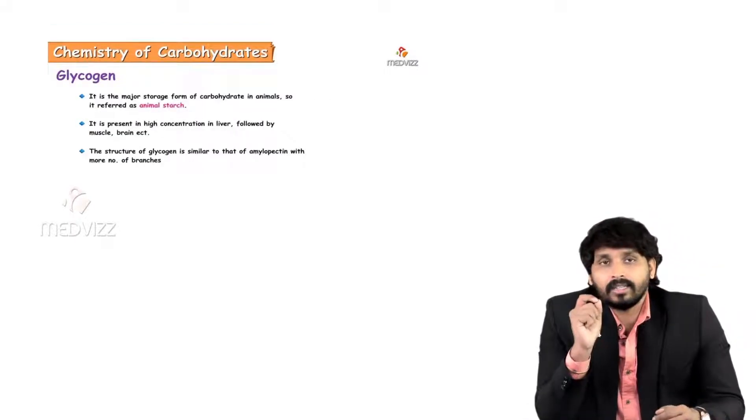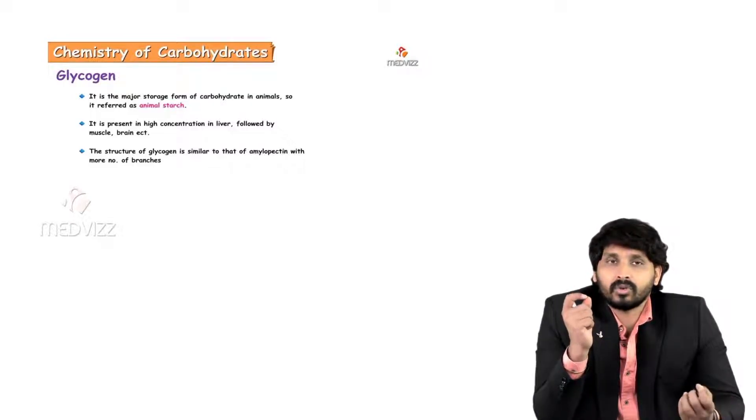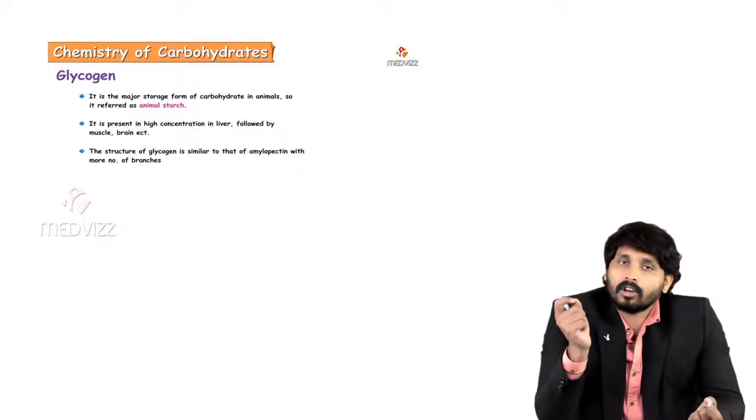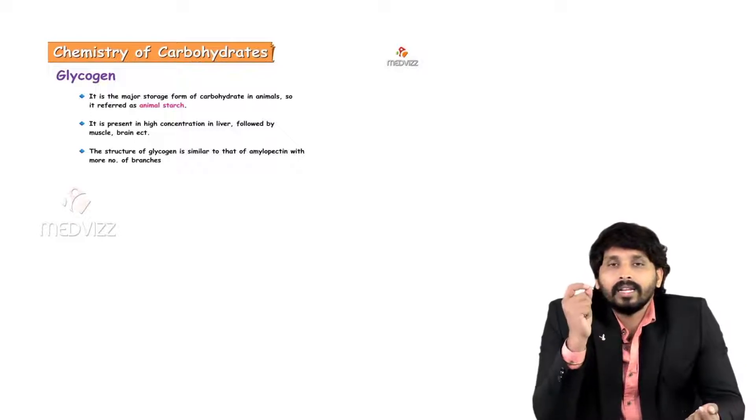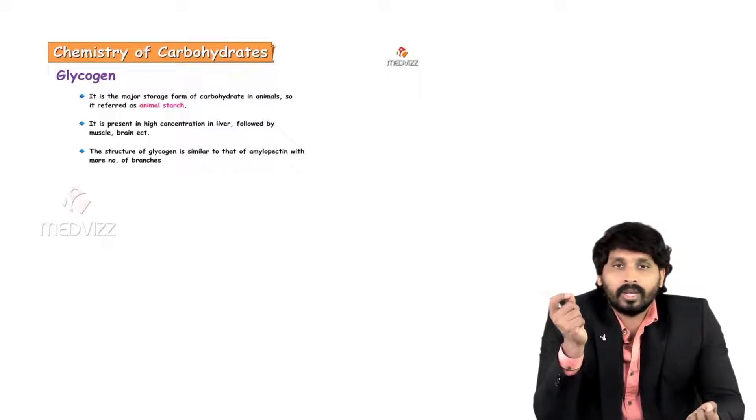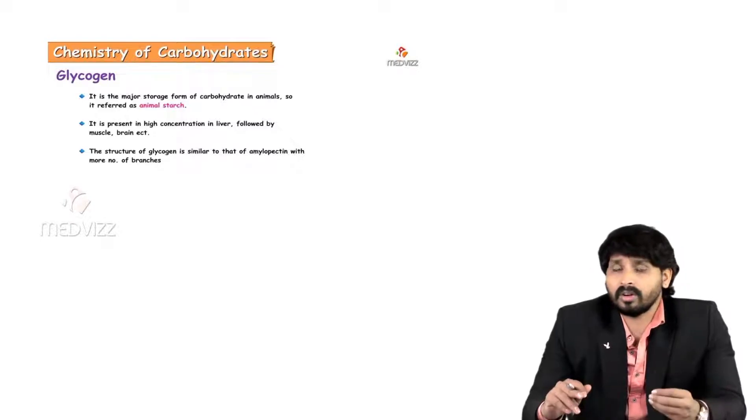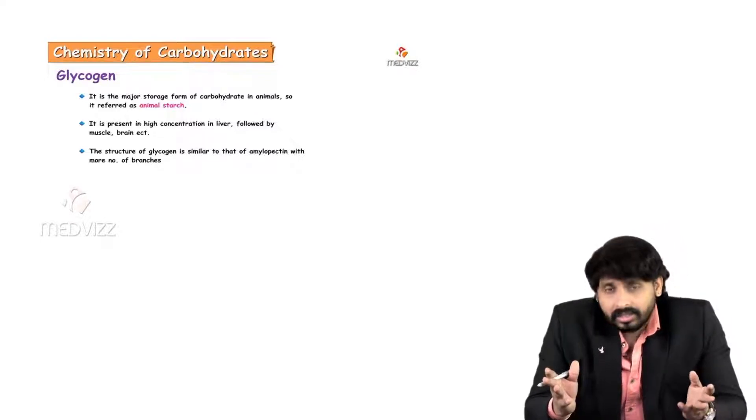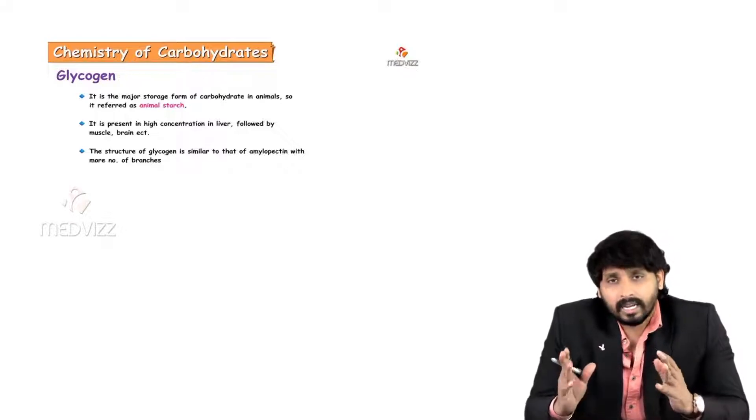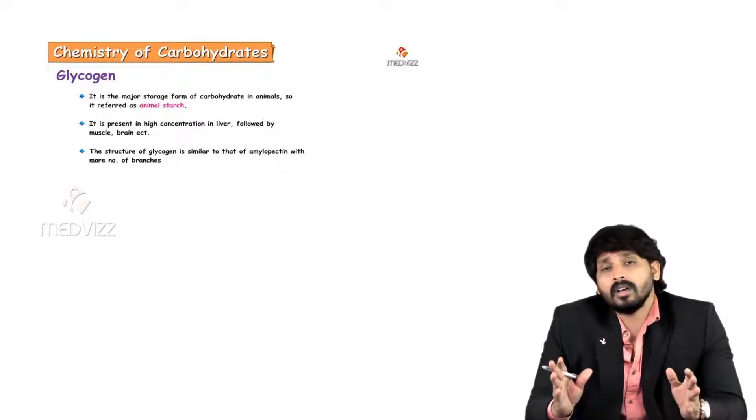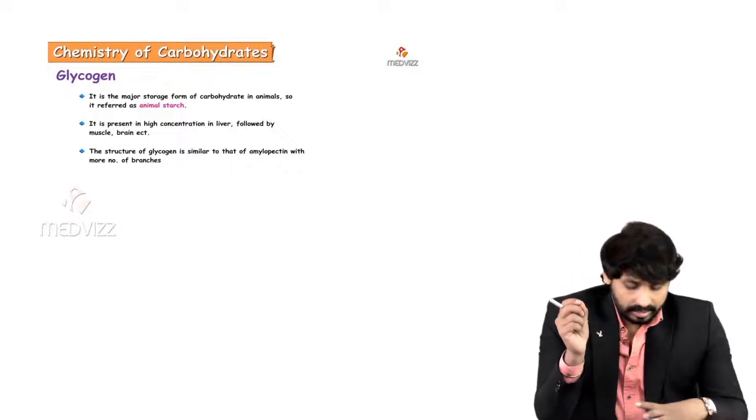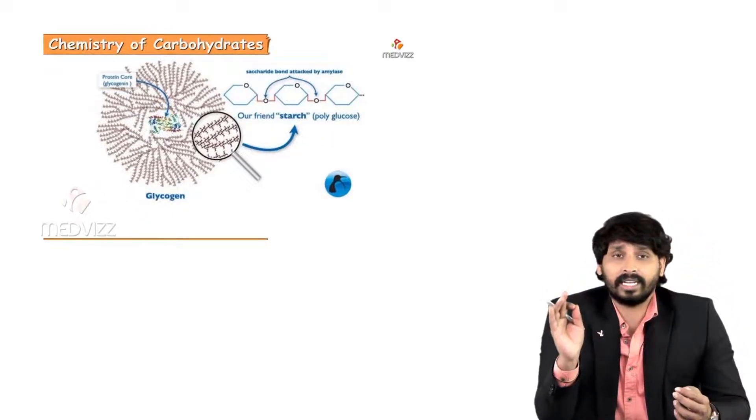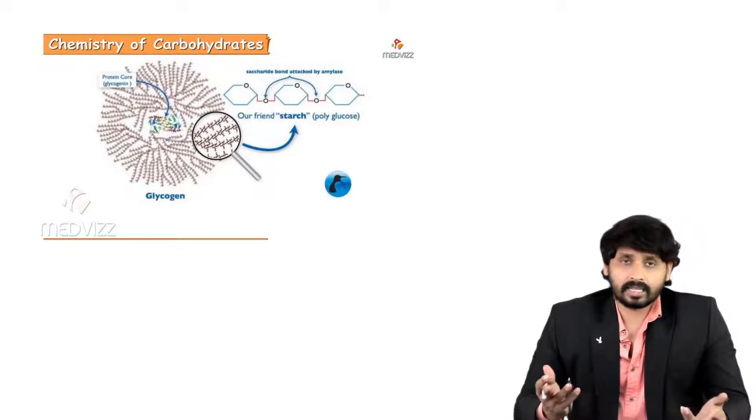Coming to the next homopolysaccharide, glycogen. Starch is a type of homopolysaccharide which stores in plants. Glycogen is a type of carbohydrate, homopolysaccharide which stores in animals. That's why glycogen is also known as animal starch. In the body, in the liver and to a lesser extent in skeletal muscles, glycogen will store. The structure of glycogen is similar to that of amylopectin. Glycogen is highly branched. It carries alpha-1,4 glycosidic linkage and also alpha-1,6 glycosidic linkage. It doesn't have any food value unlike starch as it is stored inside the body.